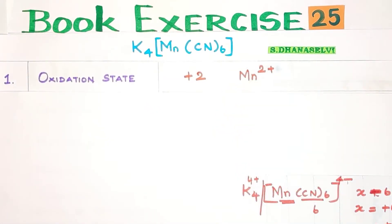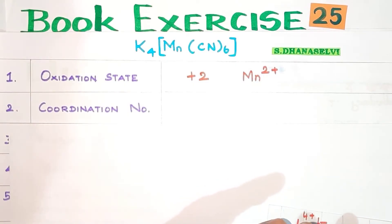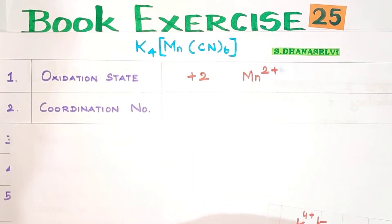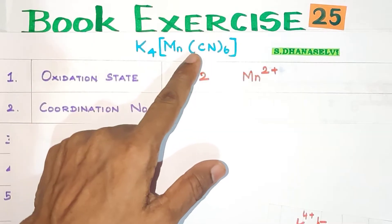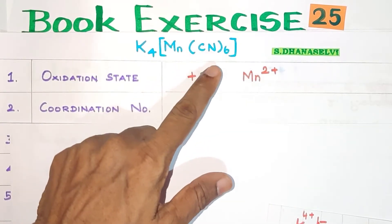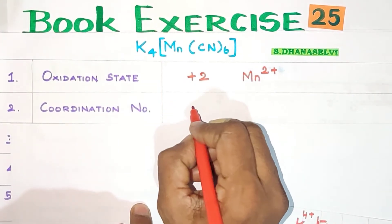Next is the coordination number. CN- is a monodentate ligand, so we count the direct number of ligands. Each cyanide ligand has one donor atom, so 6 cyanide ligands means 6 donor atoms. Therefore, the coordination number is 6.